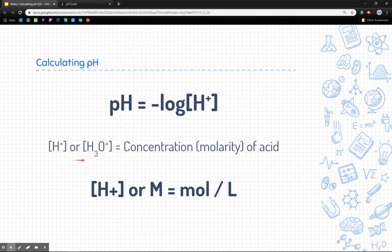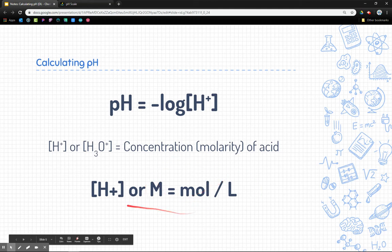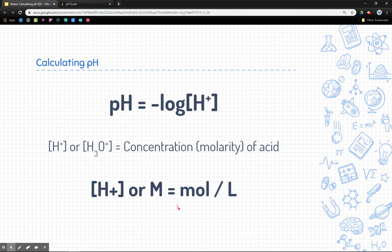Now remember, it could be H+ or H3O+. We're going to use those interchangeably. So just remember, you might see one or the other. Now, remember the concentration, another name for concentration is molarity. So we're also going to be using the molarity equation. So the [H+] concentration or the molarity of the acid is equal to the moles per liter. So we're going to need to use both of those.